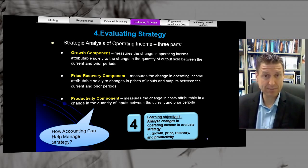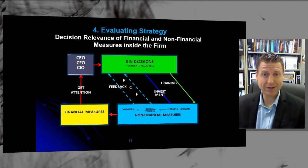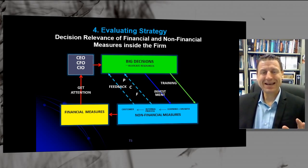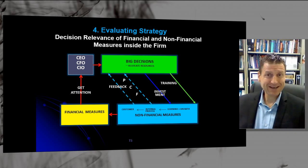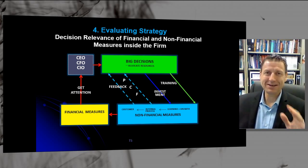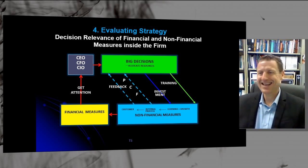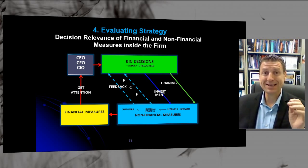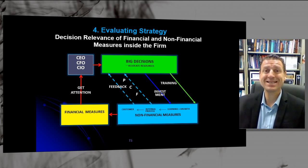Let me give you the big picture before we get into the details of these three components. Companies — big corporates — have a CEO, a CFO, CIOs; they've got C everything, the C-suite, C managers. And they pay attention to financial accounting measures.